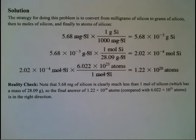Note that 5.68 milligrams of silicon is clearly much less than one mole of silicon. One mole of silicon has a mass of 28.09 grams.